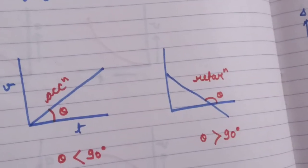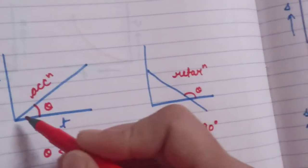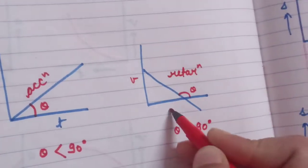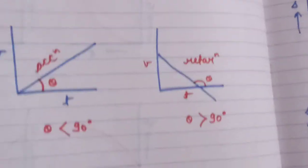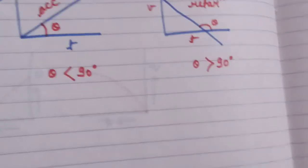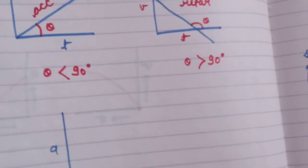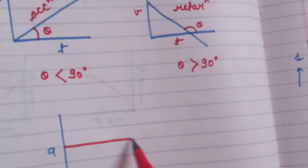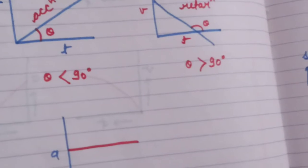So here the VT graph shows acceleration and here the VT graph shows retardation. Now let's talk about acceleration. For constant acceleration, the graph is like that. Now let's talk about all three types of graphs: ST, VT, and AT.